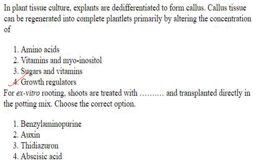For ex vitro rooting, shoots are treated with auxin. Usually IBA — indole butyric acid — is used, and the shoots are transplanted directly into the potting mix. The answer is auxin. Answer is option 2.